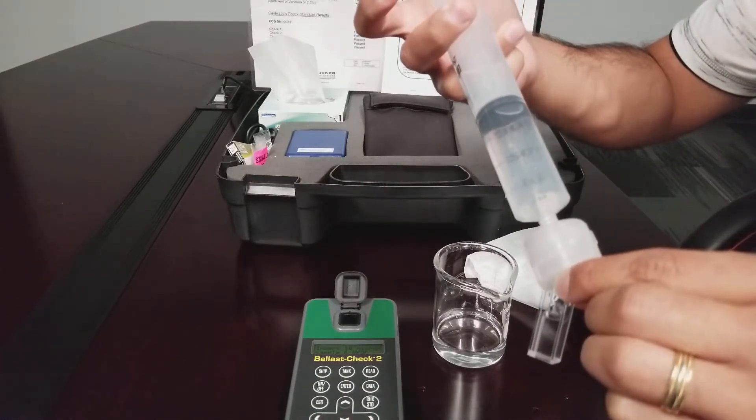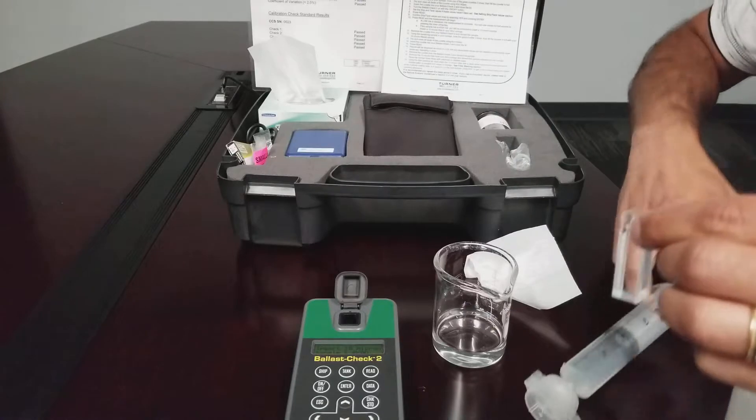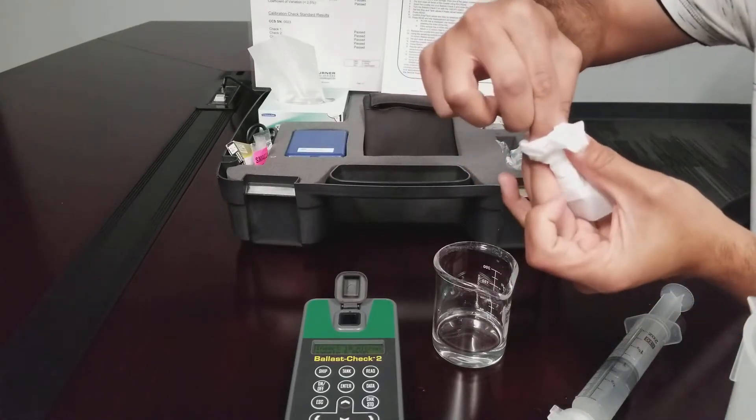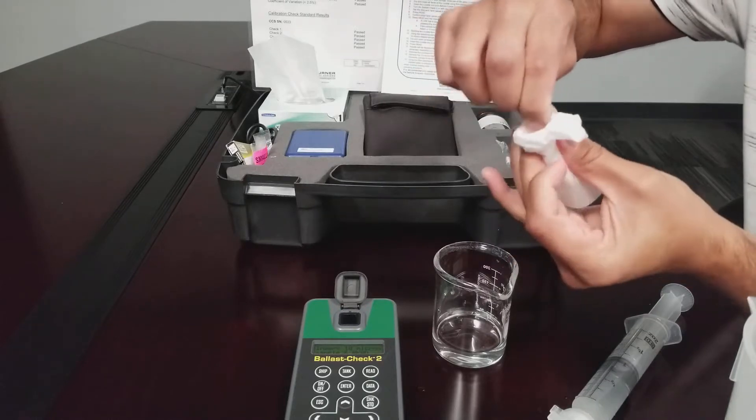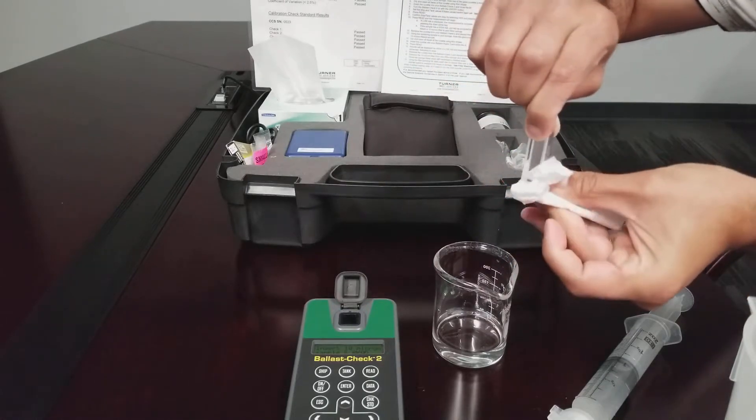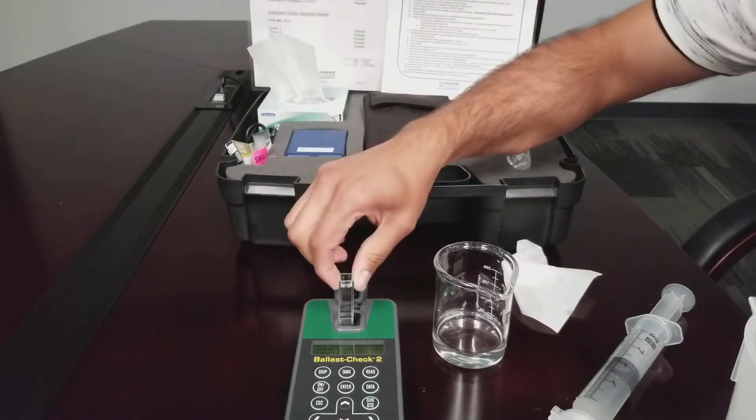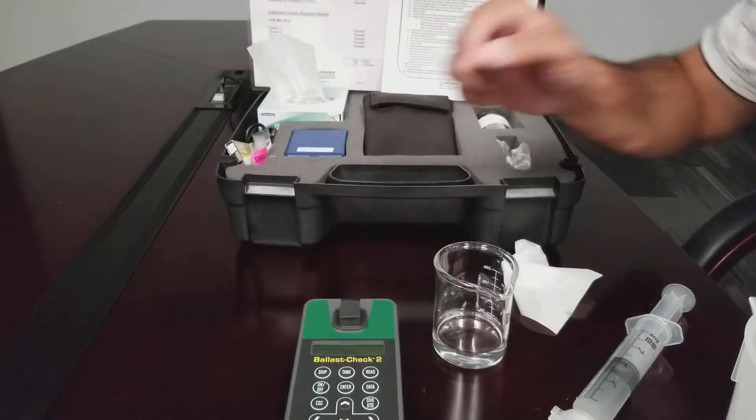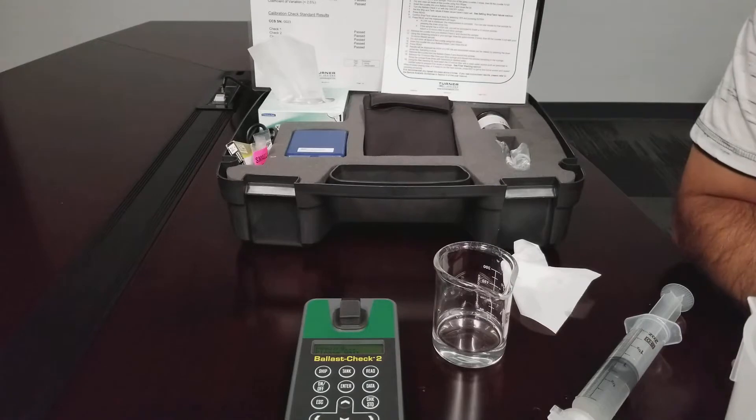Fill the cuvette three-quarters full. Use a Kim Wipe to wipe down the sides of the cuvette to remove any moisture or fingerprints. Insert the cuvette into the sample compartment. Close the lid and press read. Wait for the measurement to complete.